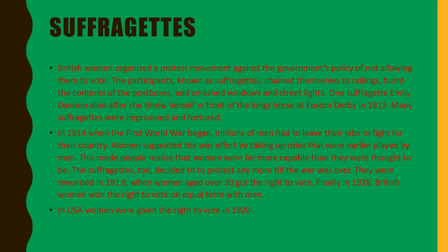Suffragettes. British women organized a protest against the government policies of not allowing them to vote. The participants, known as suffragettes, chained themselves to railings, burnt the contents of post boxes, and smashed windows and streetlights. One suffragette, Emily Davidson, died after she threw herself in front of the king's horse at Epsom Derby in 1913.